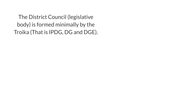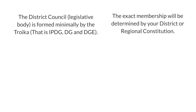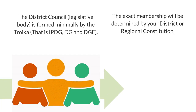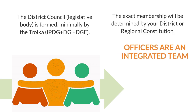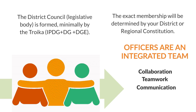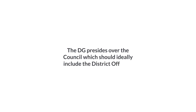The district council legislative body is formed minimally by the TRIKA — that is IPDG, DG, and DGE. The exact membership will be determined by your district or regional constitution. Officers are an integrated team, collaborating effectively together, communicating diplomatically and with ambition to reach goals and advance the YMI movement. The DG presides over the council, which should ideally include the district officers as well as representatives from each club.